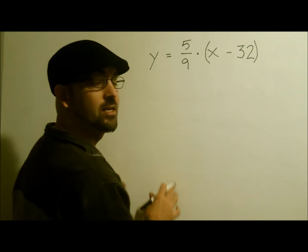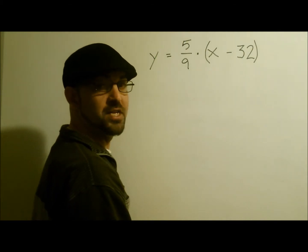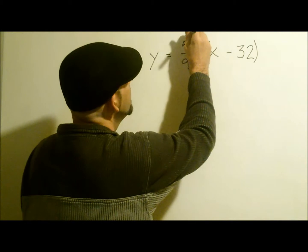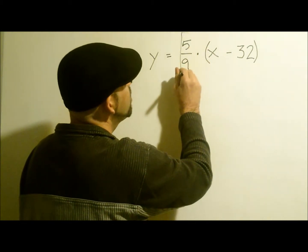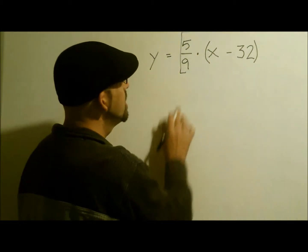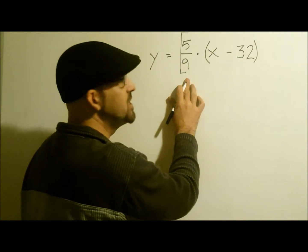How would I do that? Well, just follow the same properties of equality. Here I'm going to multiply both sides by 9 just to get rid of the denominator.